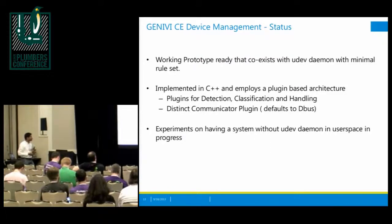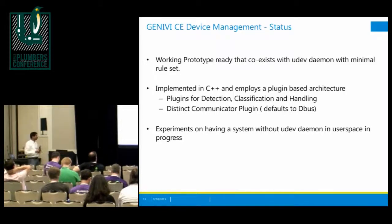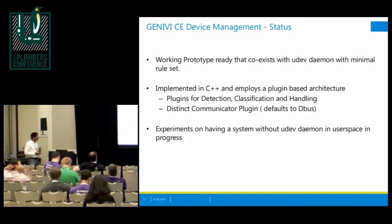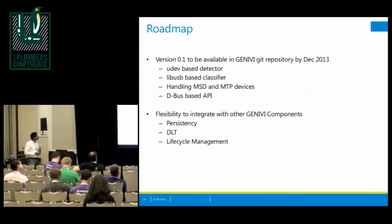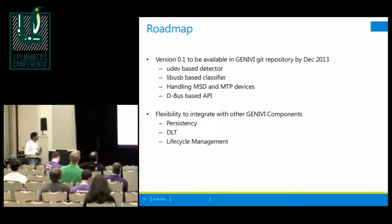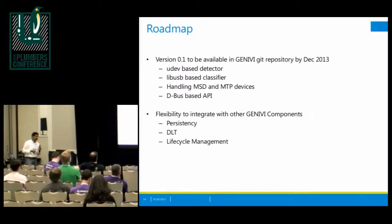We do have a prototype that's pretty much working with UDEV in user space and the minimal rule set. We are also experimenting with removing the UDEV daemon from user space. I'm not taking anything from the UDEV project, but it's just a thought that if this service is just going to be running one or two or three rules, then we might as well pull it inside this component. This is pretty much our internal roadmap. We are kind of backlogged on this but we do have the code — it's just a matter of pushing it, and it's going to be available for all of us to play with by this time frame.